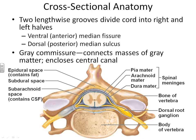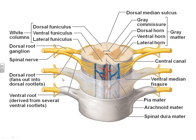With the vertebrae present, the body marks the anterior or ventral side of the spinal cord, and the spinous process marks the more posterior or dorsal side. Without the vertebrae, we look for the dorsal median sulcus and the ventral median fissure — the fissure goes deeper. The gray matter is separated into different horns: the ventral horn, lateral horn, and dorsal horn. The white matter is separated into funiculi: the ventral funiculus, lateral funiculus, and dorsal funiculus.